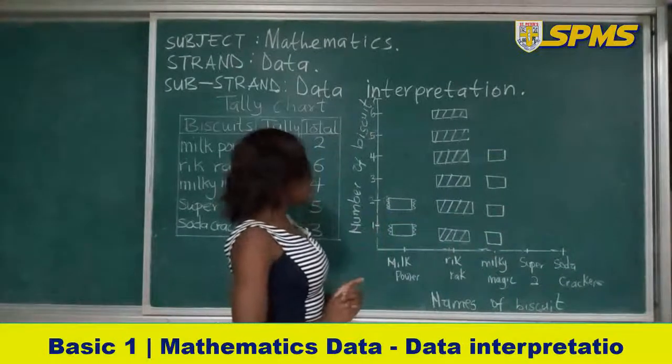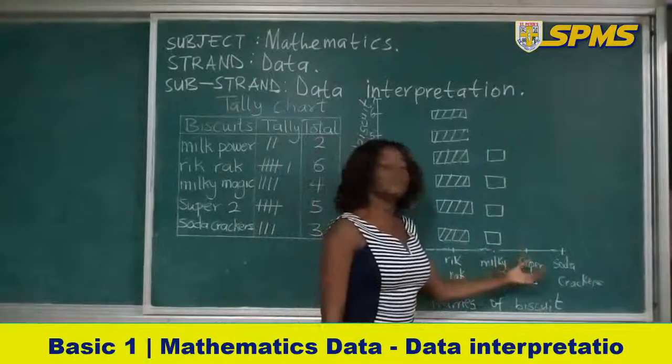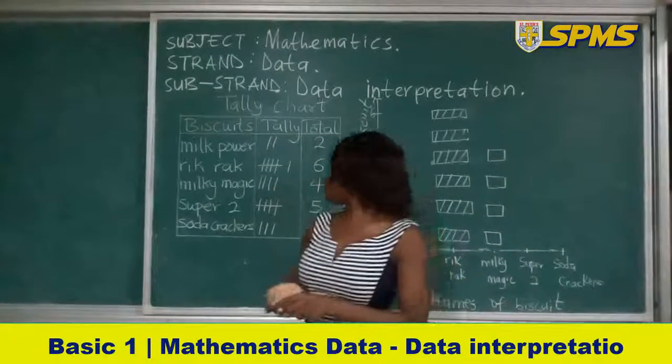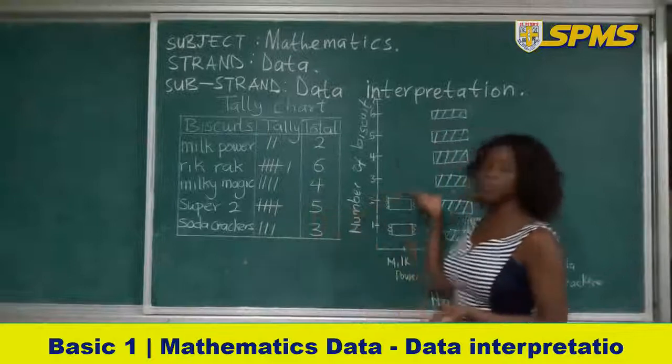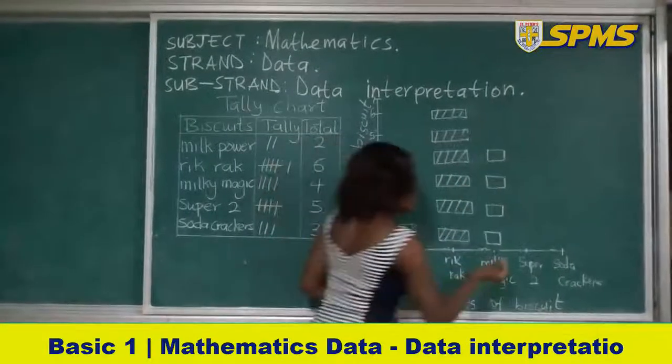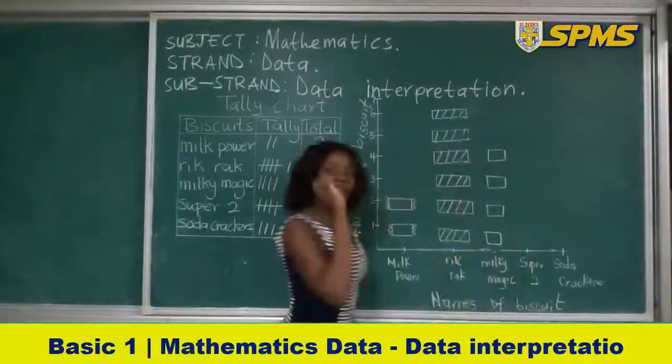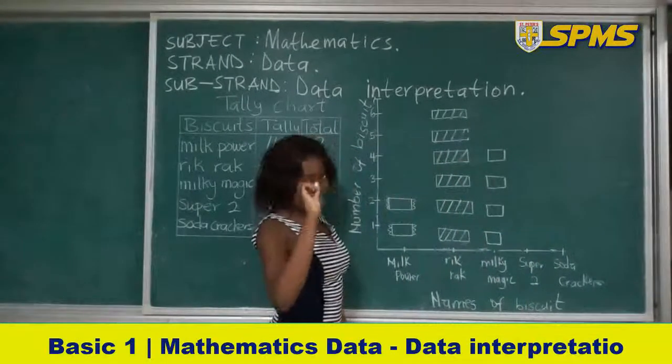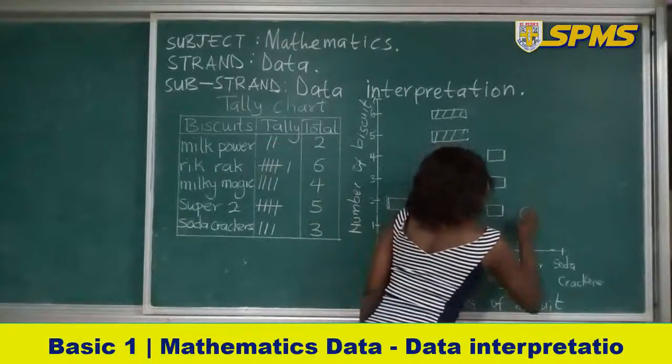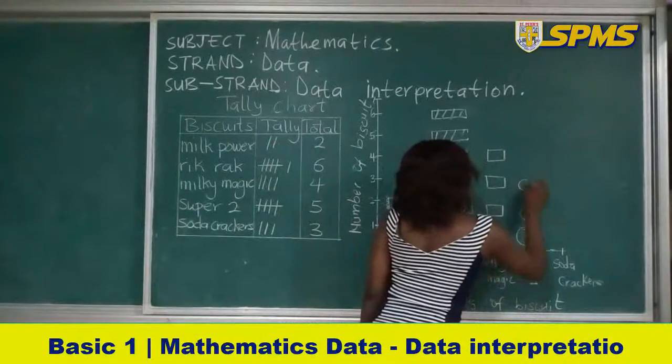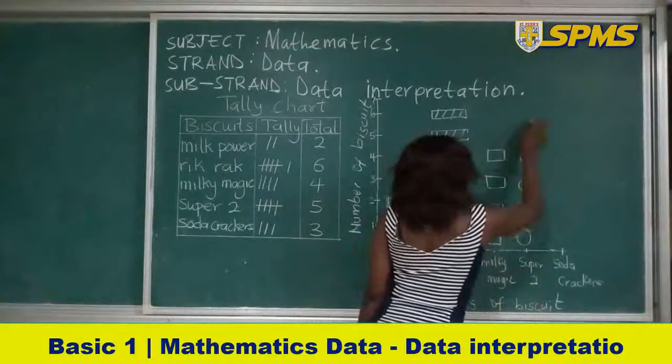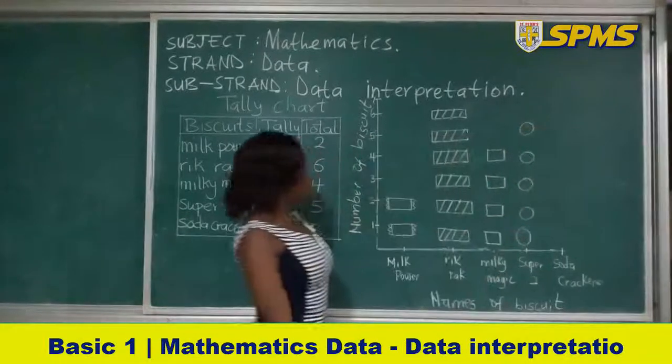Now let's move on to our next biscuit, which is what? Super 2. Super 2 is how many? Five. So we are going to draw five biscuits over here. Let's start. Super 2 is round like this. Round. One, two, three, four, and the last one is five.